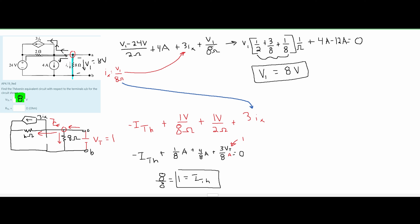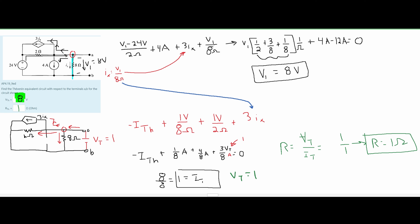If we tried a different test voltage, it would stay the same — even if we used 24, we would eventually get 24 over 24, which gives us 1. Using Ohm's law, our resistance equals VT over IT. We know our voltage is 1 and our current is also 1, so resistance equals 1 ohm. After we do this, we have the answer to this problem: we have 8 volts for our VTH and 1 ohm for our RTH. That is how you would go about this problem.